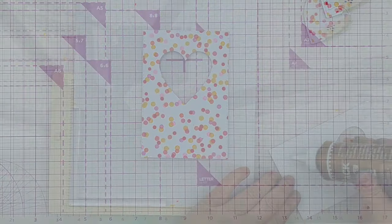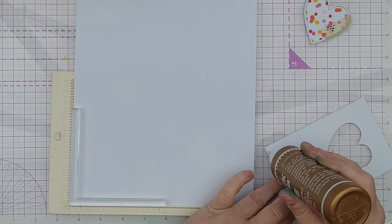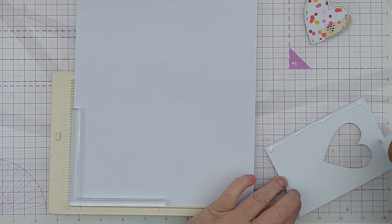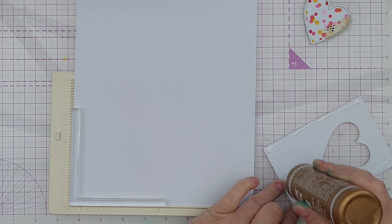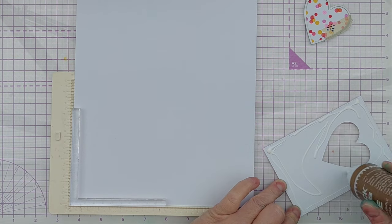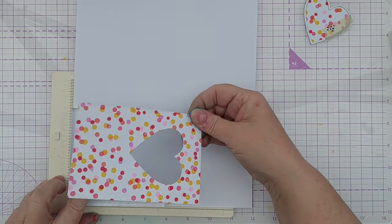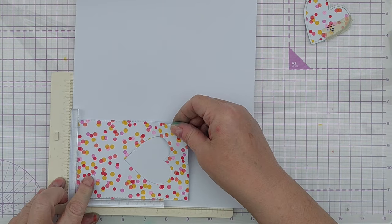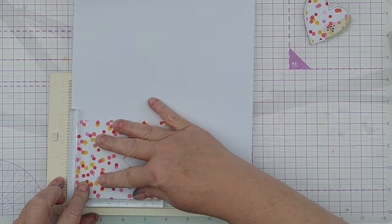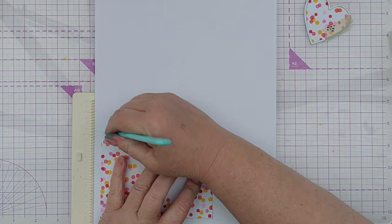I then glued this to a piece of A4 paper, positioning it using my corner positioner on my scoreboard just to make sure it was lined up nicely, and then I scored a line in the appropriate place and folded my A4 paper in half to make a card, which I then trimmed down to the appropriate size.